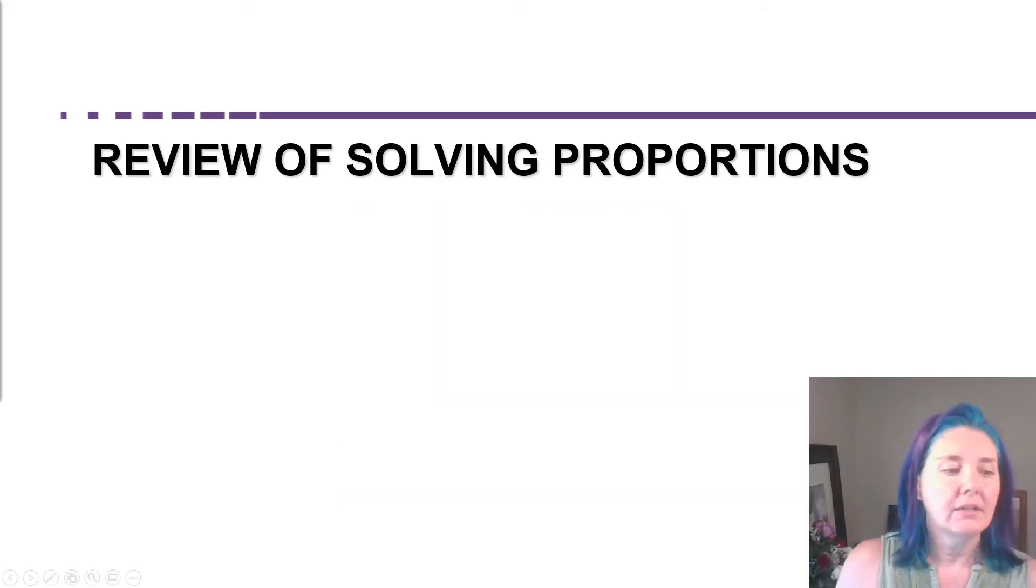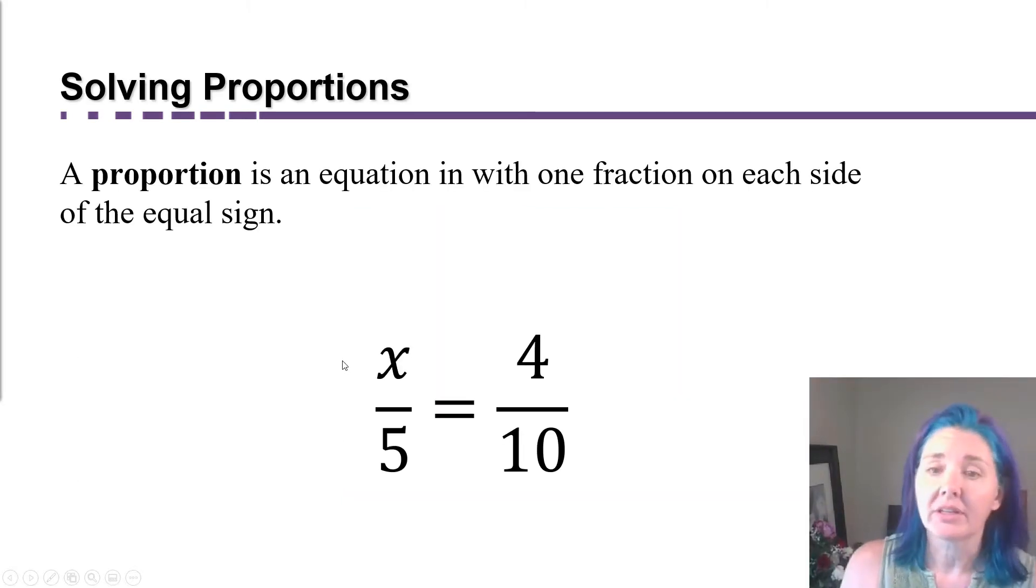So what is a proportion? A proportion is just an equation that has one fraction on one side and one fraction on the other. One fraction on each side of the equal sign. So for example, we have x over 5 equals 4 over 10.